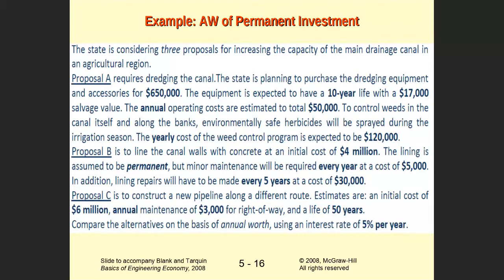Proposal B will be an investment of a concrete canal or wall costing $4,000,000, and the lining is assumed to be permanent — that is a key word. Minor maintenance will be required every year at a cost of $5,000, and repairs will have to be made every 5 years at a cost of $30,000. So there is an annual operating cost of $5,000 every year and $30,000 every 5 years, and this project has a permanent life.